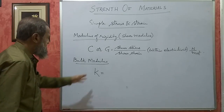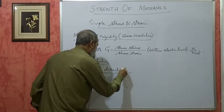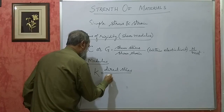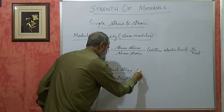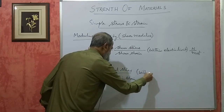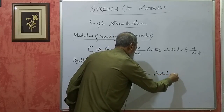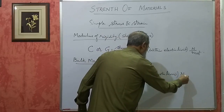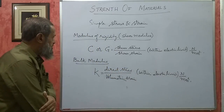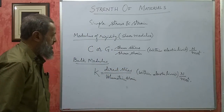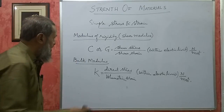K is defined as ratio of direct stress to volumetric strain, again within elastic limit. The condition is the material should be within elastic limit. Unit of this is also Newton per mm square, because strain does not have a unit. So there are totally three moduli — moduli is the plural of modulus.